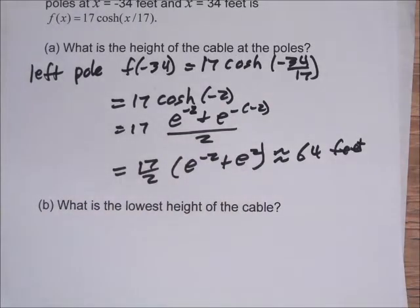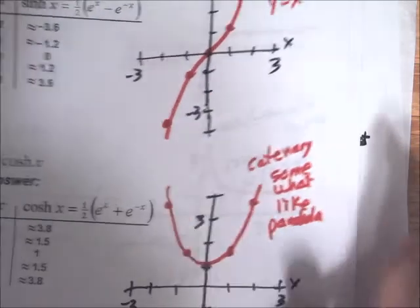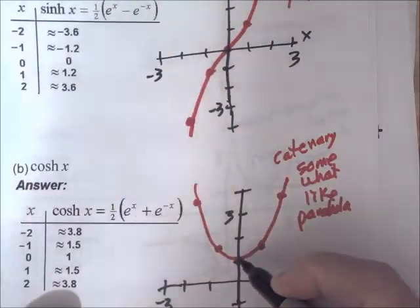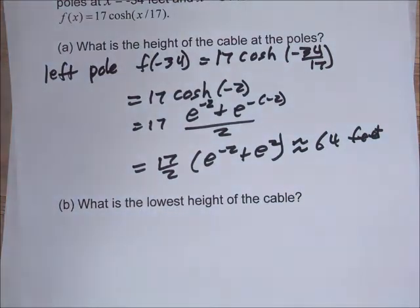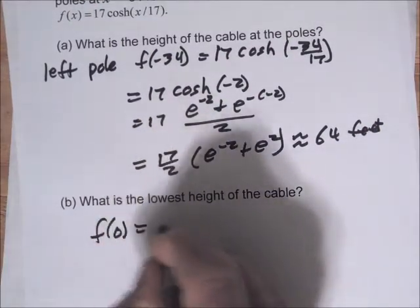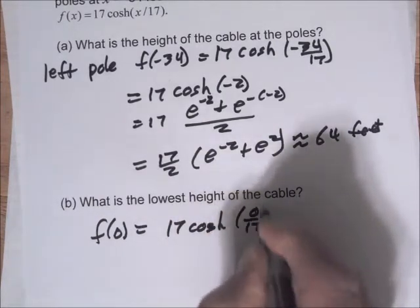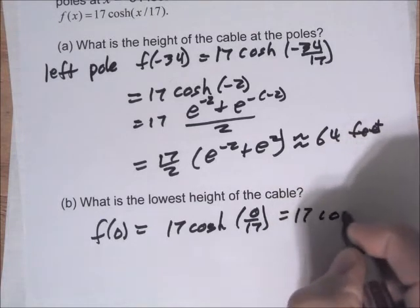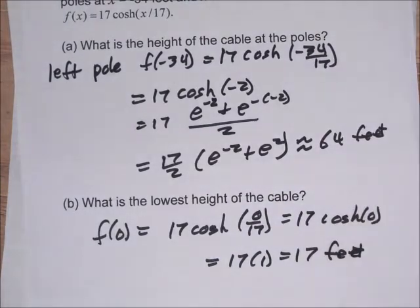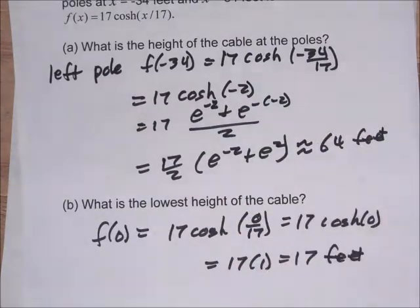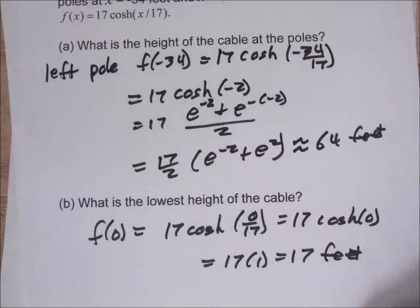The lowest point — let's bring out the graph. We did this graph earlier of cosh, and we found that f(0) is equal to 1; that's the lowest point. Cosh of 0 is equal to 1. So if we do f(0), that's 17 cosh of 0 over 17, which is 17 cosh of 0, and cosh of 0 is 1. So 17 times 1 is 17 feet. We put e to the 0 plus e to the minus 0, but that equals 1. So the lowest point — the height of the cable — is 17 feet.